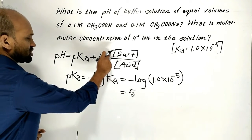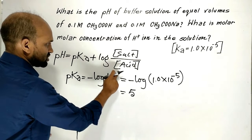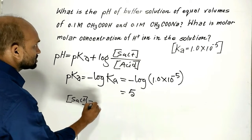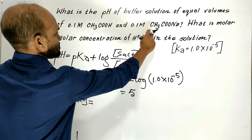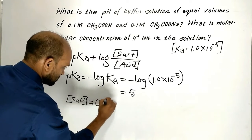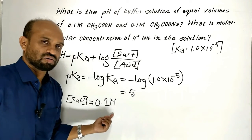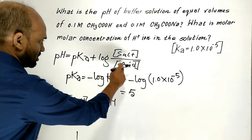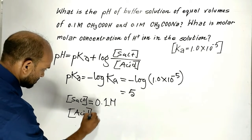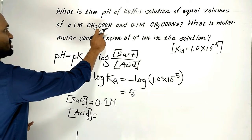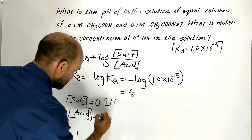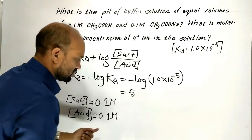Now let's find the concentration of salt and the concentration of acid. The concentration of salt is 0.1 mol per liter, and the concentration of acid is also 0.1 mol per liter.